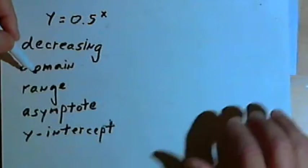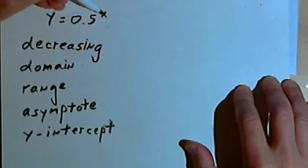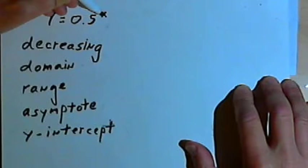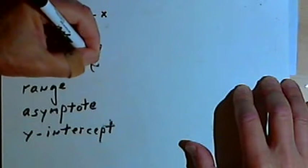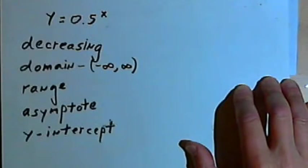The domain of any function is basically whatever x values we can put into the function. And since we can raise 0.5 to any number whatsoever, a positive number, a negative number, or 0, the domain will be all real numbers from negative infinity to infinity.